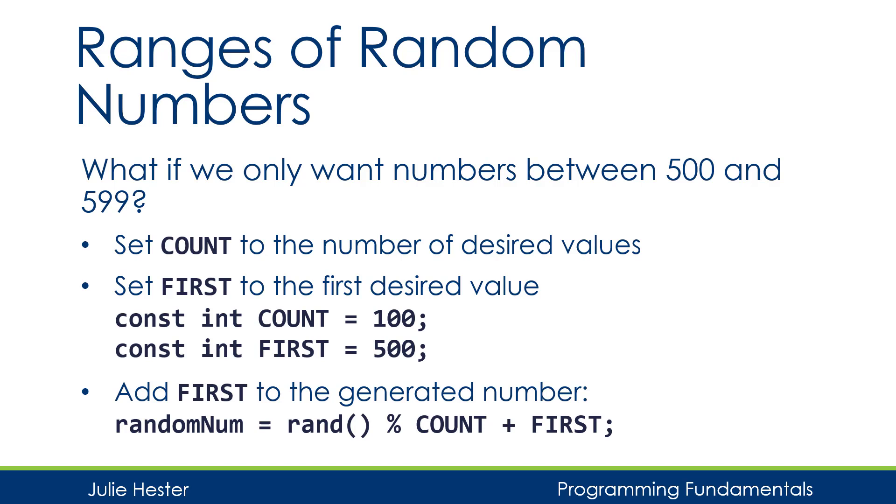And then when I get my result, I'm going to add that to the number FIRST, which is 500 in this case. And so what it looks like is, rand MOD COUNT is going to give me values between 0 and 99. We're going to add 500 to that value, and then we will have values between 500 and 599. So that's how you can use a different range for your random numbers.